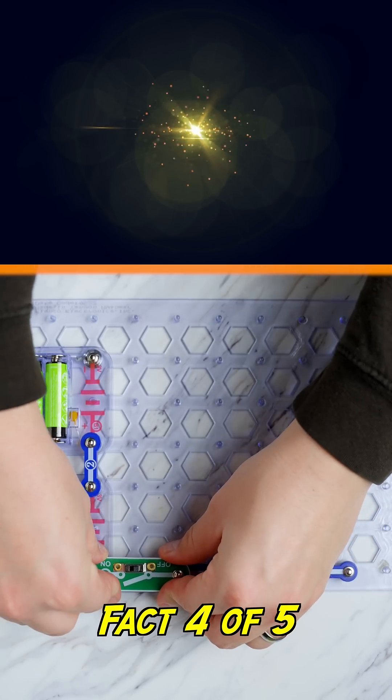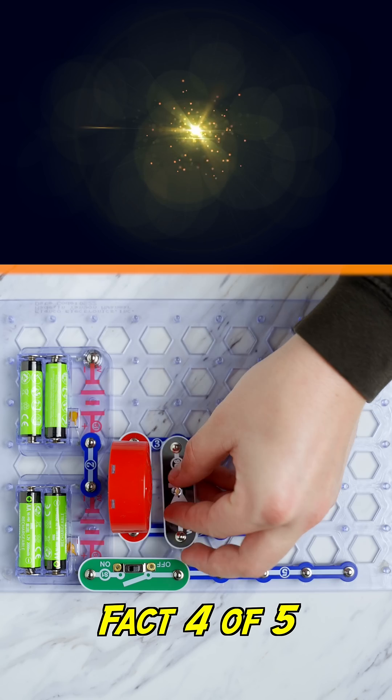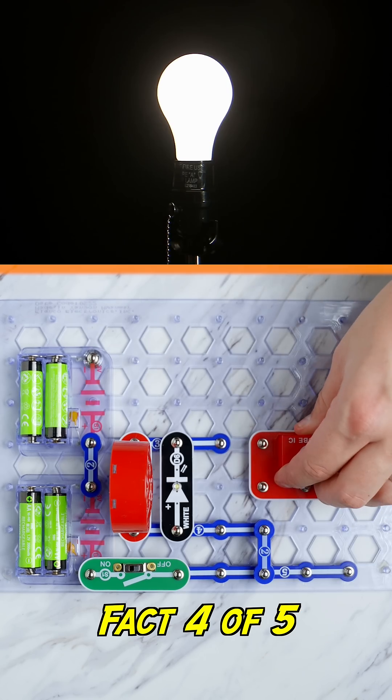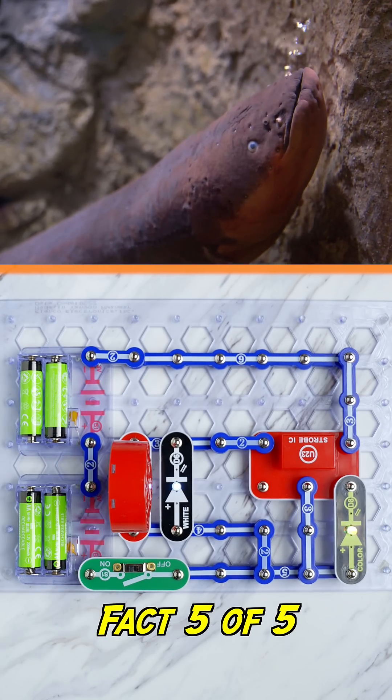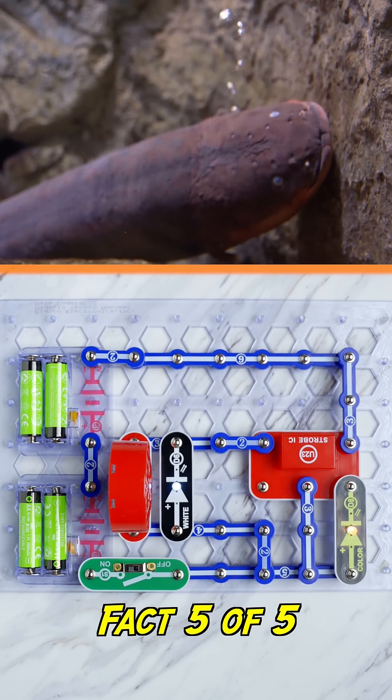25,000 fireflies combined make as much electricity as a single 60-watt incandescent light bulb. Electric eels can make a surge of electricity stronger than the power you get from an outlet in your house.